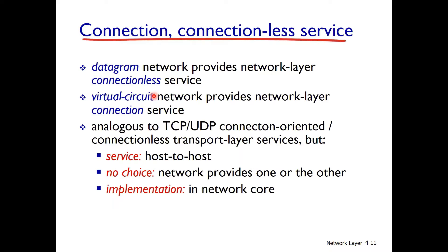The datagram network is called connectionless protocol, while virtual circuit network is connection-oriented service. This is analogous to the transport layer, where TCP is connection-oriented and UDP is connectionless. Similarly, virtual circuit network provides network layer connection-oriented service, and datagram network provides connectionless service.